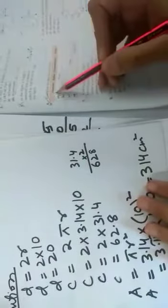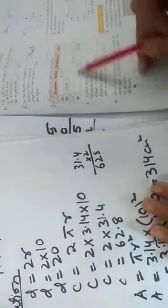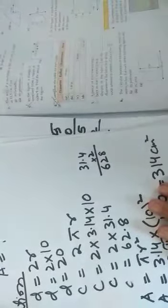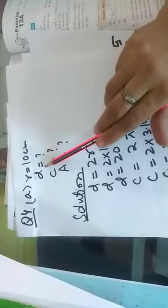One by one we will solve it. Come to part A. No need to make a table in your copy. Just mention question number 4 in your copy and mention the page number. See in part A, you are given the radius which is 10 cm and you have to find out diameter, circumference and area. Diameter is double of radius.